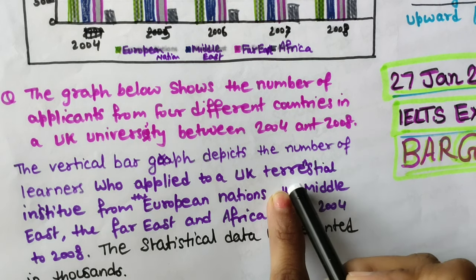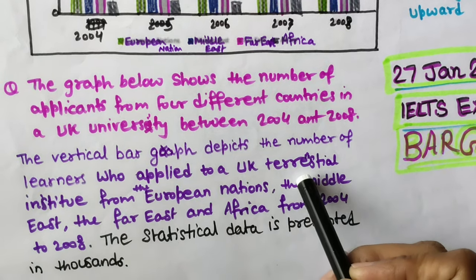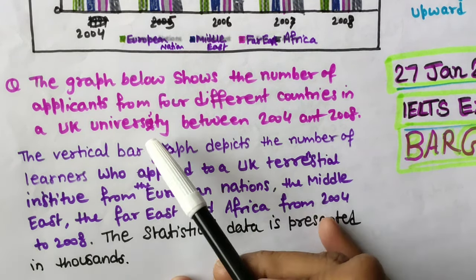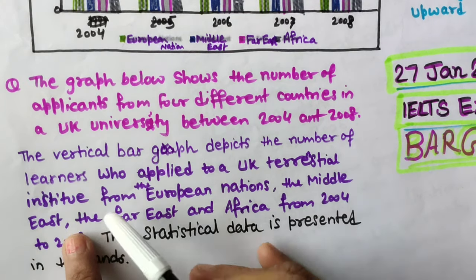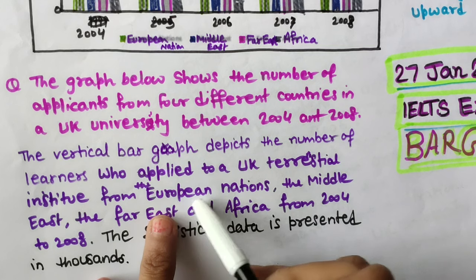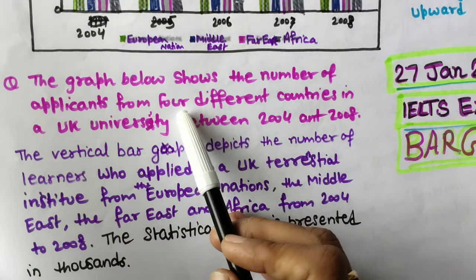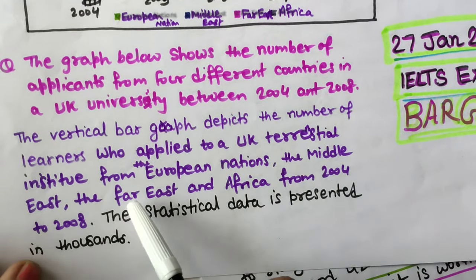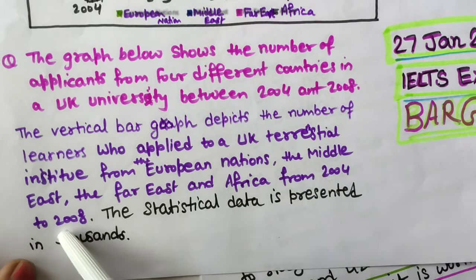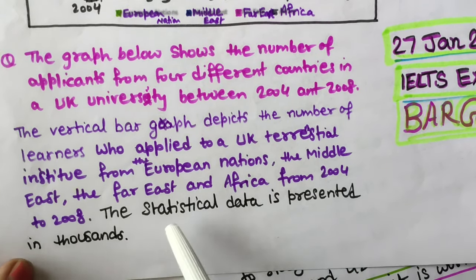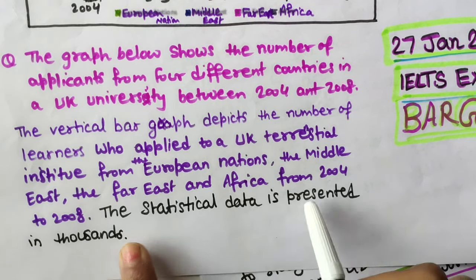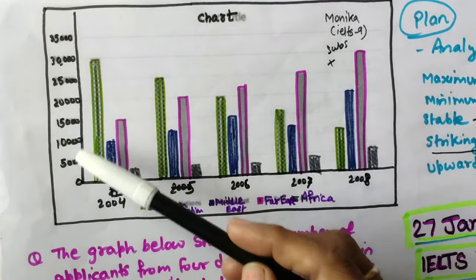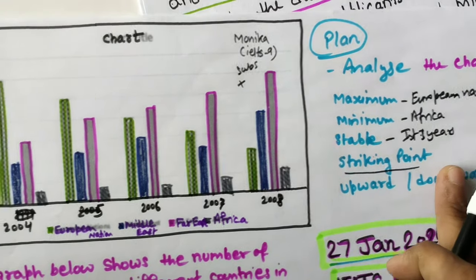If you are unsure about spelling 'tertiary' you can just use 'university'. Continue: 'from the European nations, the Middle East, the Far East, and Africa, from 2004 to 2008.' And the last line is: 'The statistical data is presented in thousands' - because the figures are given not in percentage, only in thousands.